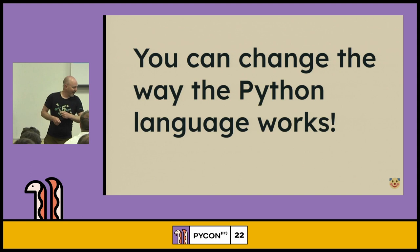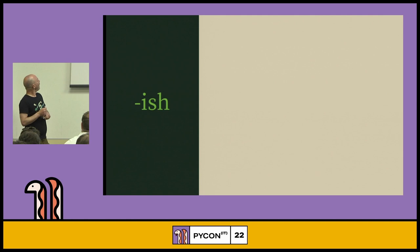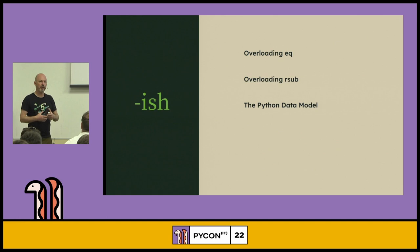So the main thing I've been getting at in this part of the talk is that there's these special dunder methods and things that are ways of changing the way that Python behaves in sometimes subtle ways, if you like. They're a way of opening up a hatch into the Python language and just kind of rummaging around and changing things. So what have we learned in this section? Well, we've learned about overloading equality, we've overloaded subtraction, and we've learned about the Python data model, which is really the reference document for all the crazy stuff you might want to do in Python.